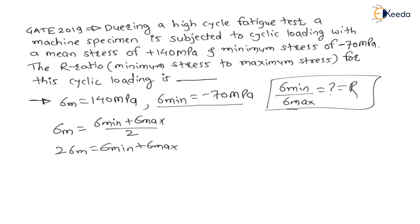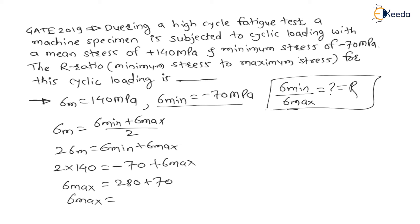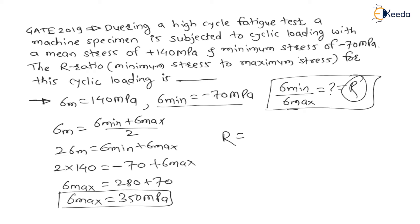Putting the values: 2 times 140 equals minus 70 plus sigma_max. Therefore maximum stress equals 280 plus 70, which gives sigma_maximum equal to 350 MPa. They are asking for the stress ratio, so R equals sigma_minimum divided by sigma_maximum equals minus 70 divided by 350.